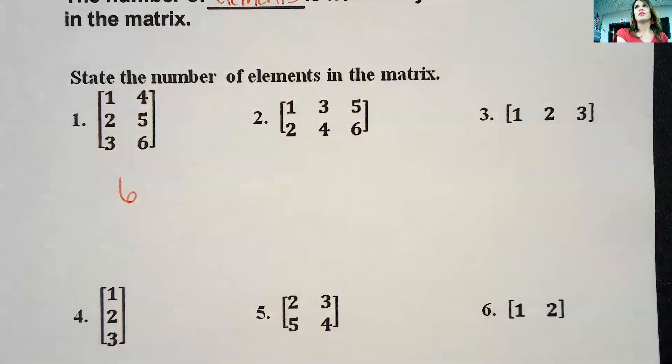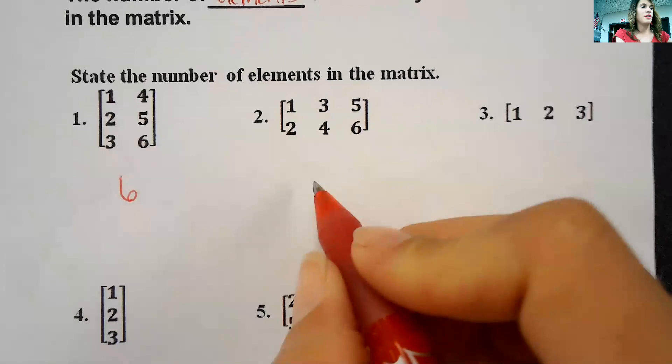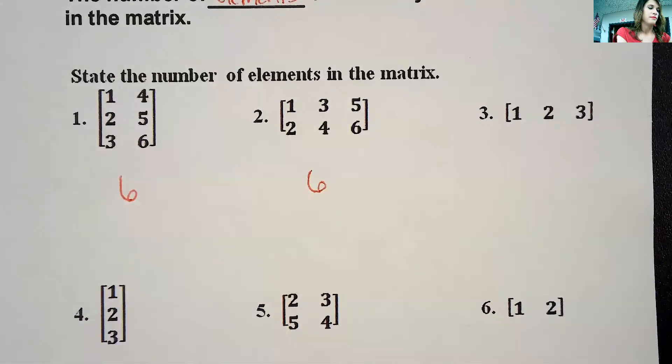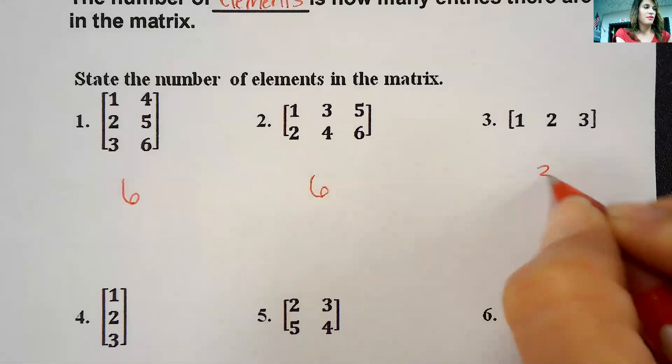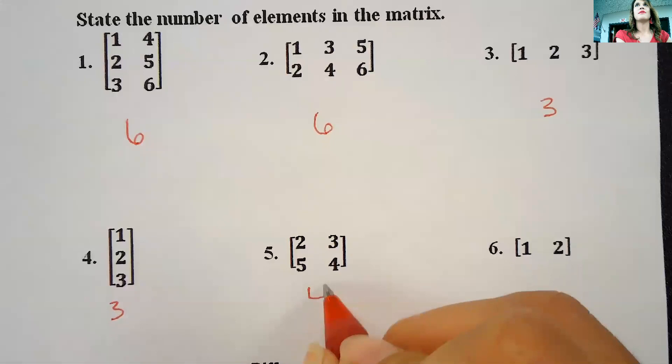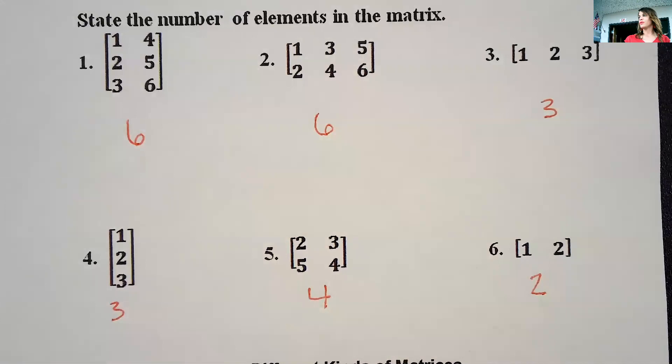Real simple. There's six elements in this matrix. How many are there? There's six of them. On number two, if you can count you can identify how many elements there are. This one has six, this one has three. This one has three. It's really hard, try not to stress.